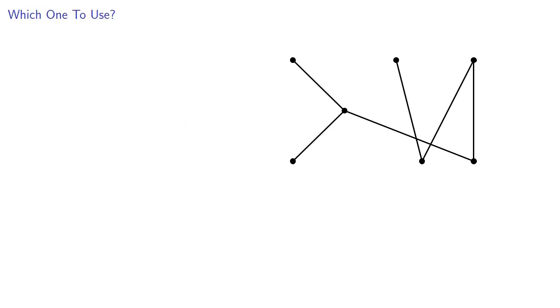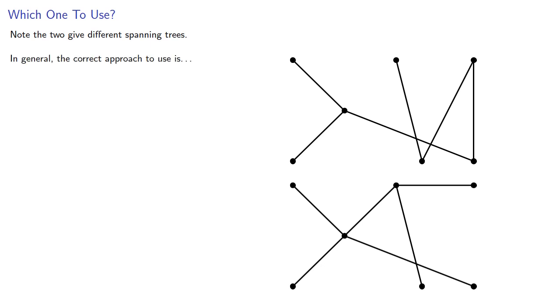Now, don't forget the first spanning tree looked like this. And notice the two approaches give us different spanning trees. And in general, the correct approach to use is whichever one works better. And so the question you've got to ask yourself is, what type of spanning tree do we want?